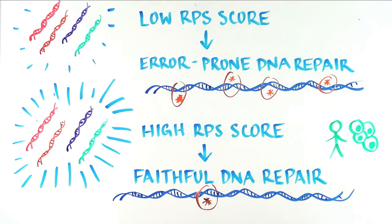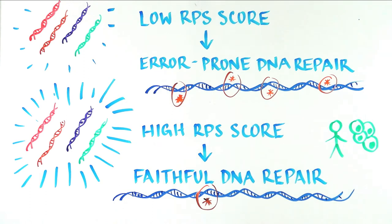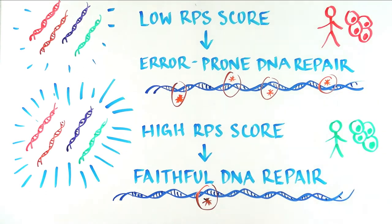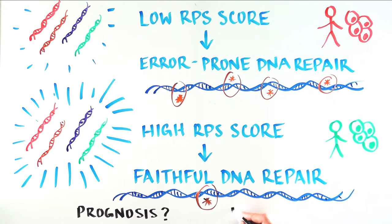So that's great! Now we have a tool to differentiate patients that have tumors that repair DNA reliably from patients with tumors that repair DNA while introducing errors. But what does this mean for prognosis and treatment?